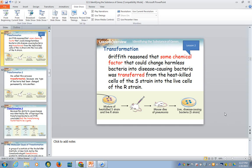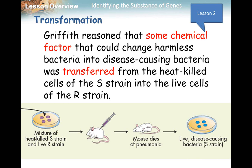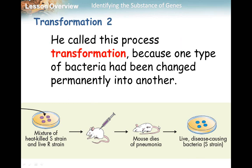Hello ladies and gentlemen, welcome to lesson number two of DNA — this is lesson number two of our chapter 12. Griffin reasoned that some chemical factor could change these harmless bacteria into disease-causing bacteria, and it was transferred from the dangerous ones to the non-dangerous ones. This is the beginning of our understanding of something being passed down from generation to generation. He called this process transformation.